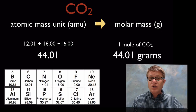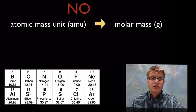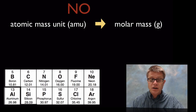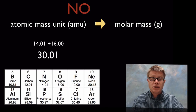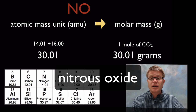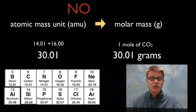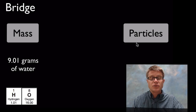One mole of carbon dioxide is going to weigh 44.01 grams. Now let's say we're looking at nitrous oxide — could you figure out the atomic mass unit of that? You'd find the nitrogen, find the oxygen, and simply add that up. So it would be 30.01. If you had a mole of nitrous oxide, that would be 30.01 grams. So it forms this bridge between the mass of an object and the number of particles found within it.